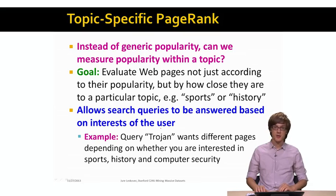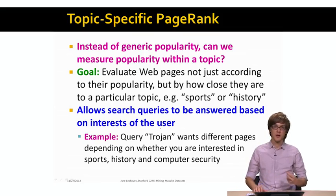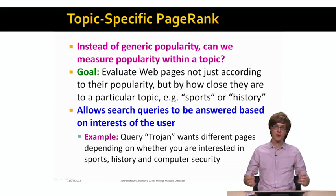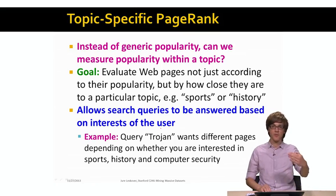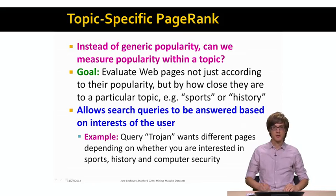Why is this interesting? If we think of web search, the way PageRank was initially thought of was that somebody will come, ask a web search query. We will go identify all the web pages that are relevant towards that query, and then we need to decide how to rank them. We would basically sort them by their PageRank score and show the pages with the highest PageRank score first to the user.